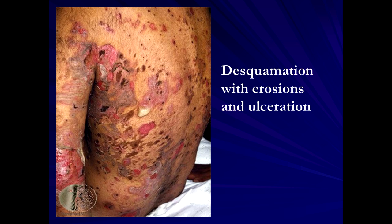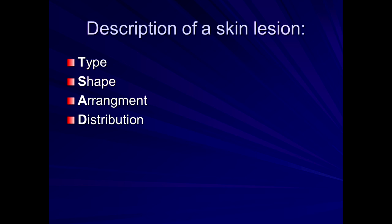Erosions mean the skin is broken down, and when broken down further, we call that ulceration. We describe lesions based on arrangement, distribution, shape, and type. We have what we call primary lesions, secondary lesions, and then descriptions based on color, and on whether you can feel the surface of the lesion — is it raised and palpable, or is it macular, meaning flat?